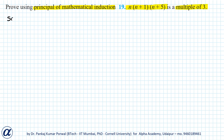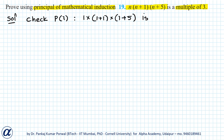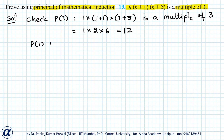To do that, first we have to check P(1). To check P(1), we substitute n=1 in the given expression. So I get 1 × (1+1) × (1+5) is a multiple of 3, which simplifies to 1 × 2 × 6 = 12, and we know that 12 is a multiple of 3. So P(1) is true.